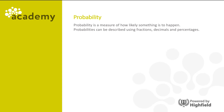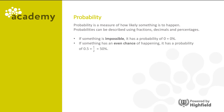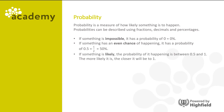Probability is a measure of how likely something is to happen. Probabilities can be described using fractions, decimals and percentages. If something is impossible, it has a probability of 0, or 0%. If something has an even chance of happening, it has a probability of 0.5, or a half, or 50%. If something is likely, the probability of it happening is between 0.5 and 1, and the more likely it is, the closer to 1 it will be.